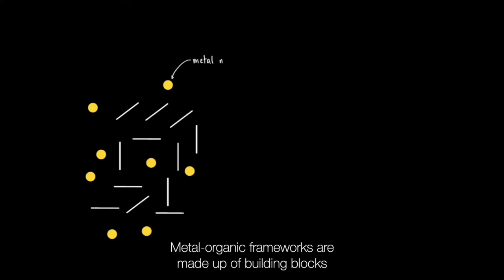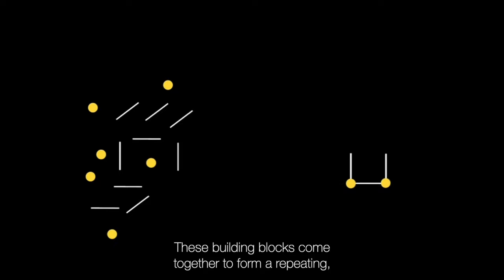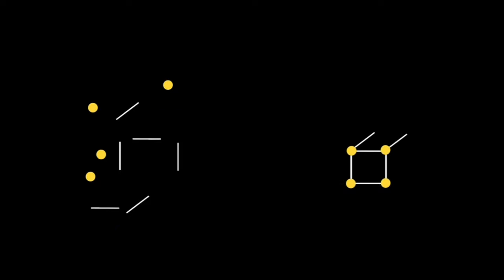Metal organic frameworks are made up of building blocks such as metal nodes and organic linkers. These building blocks come together to form a repeating cage-like structure known as a MOF.